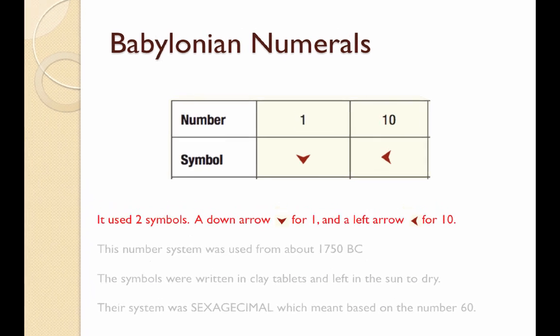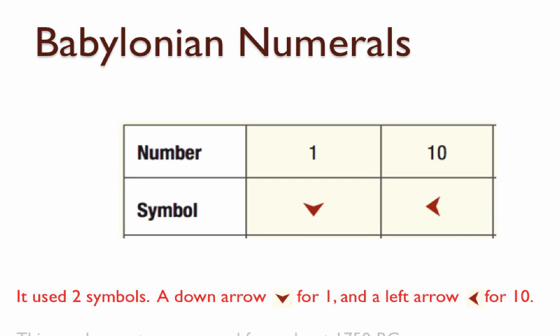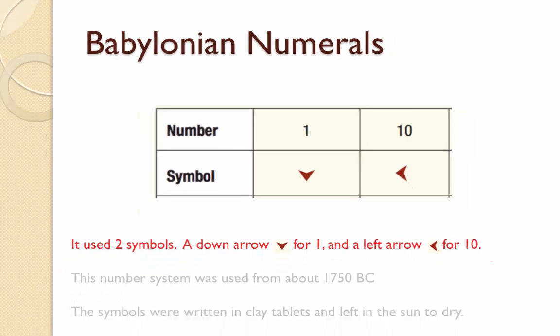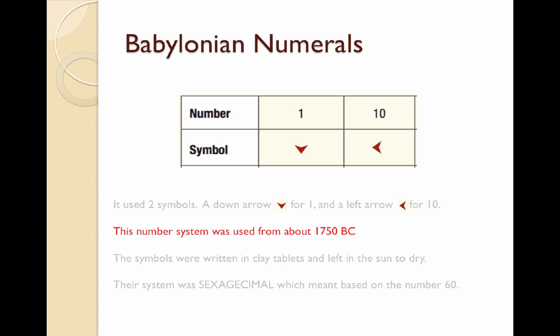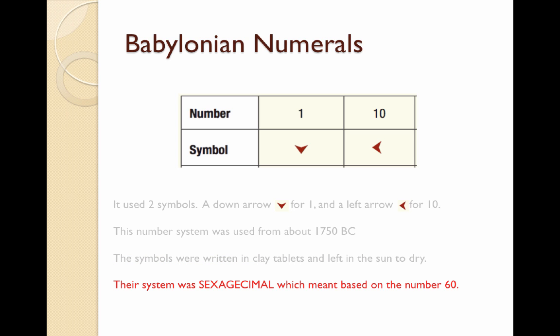The Babylonian number system seems simple at first — it only uses two symbols: a down arrow for one and a left arrow for ten. The number system was used from about 1750 BC, around the times of the ancient Egyptians. The symbols were written in clay tablets and left in the sun to dry and harden. Their system was sexagesimal, which means that it was based on the number 60.